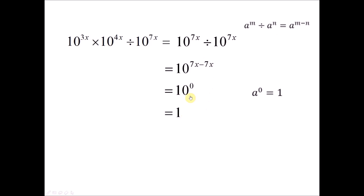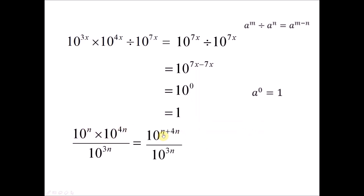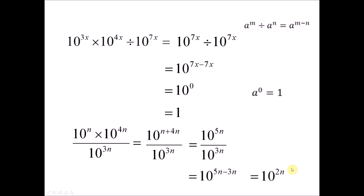If you're not sure, you can always use your calculator to check the answer. Now we try again. Check the base numbers — they are the same. When you multiply, you add n plus 4n, giving 10 to the power of 5n. Then when you divide, you subtract: 5n minus 3n gives 10 to the power of 2n.